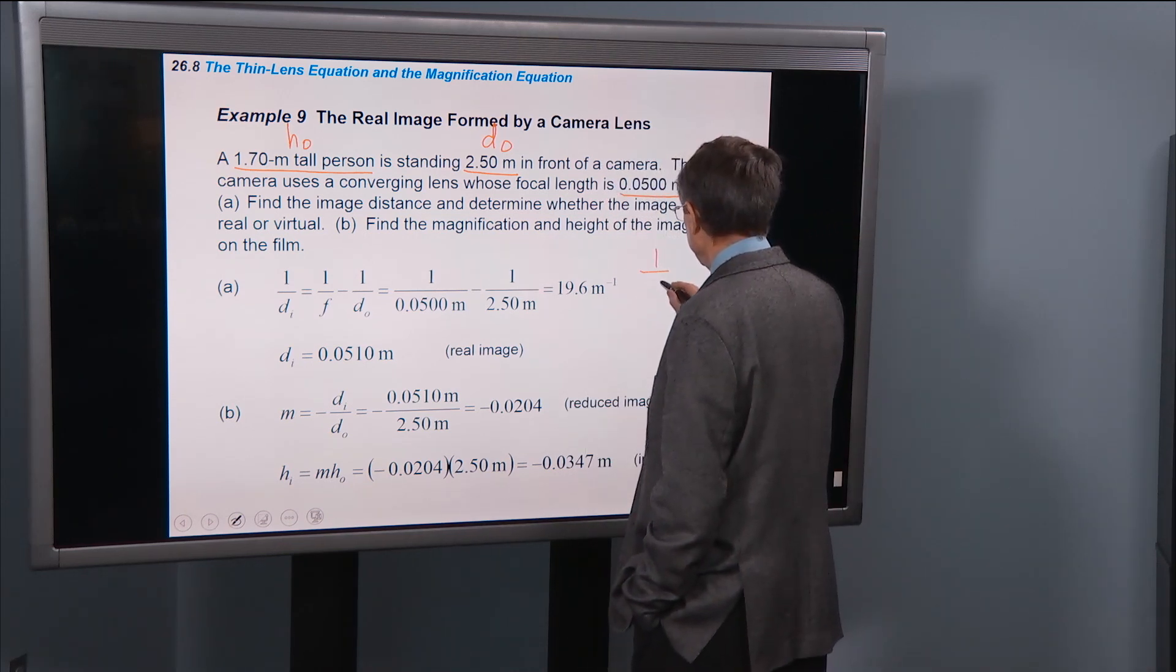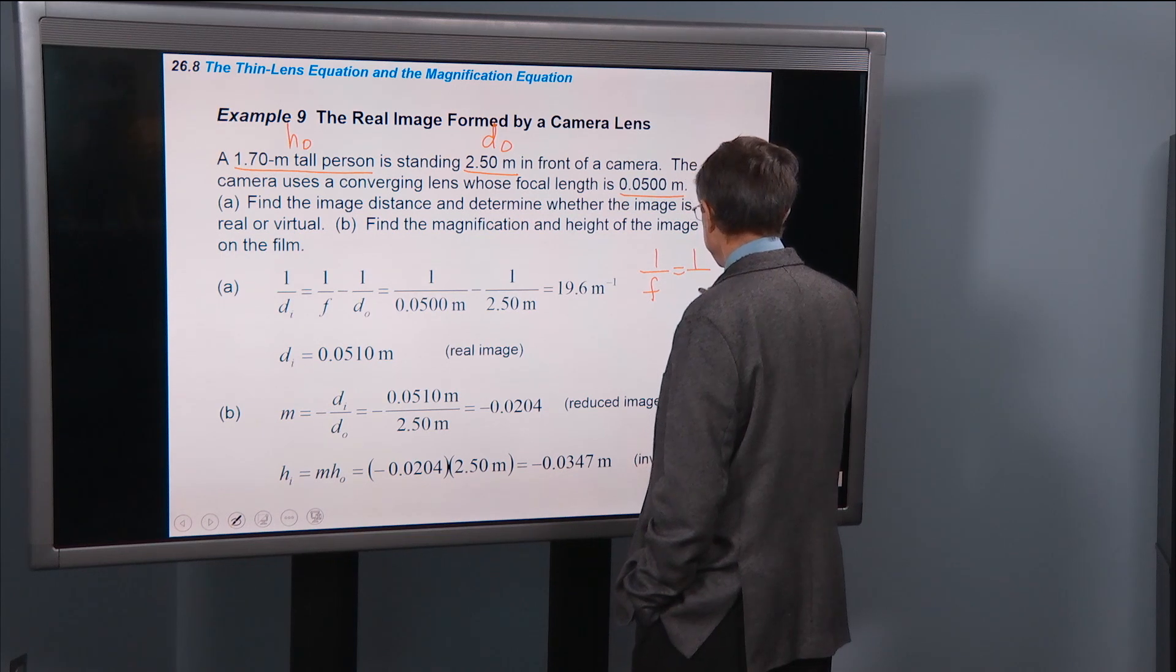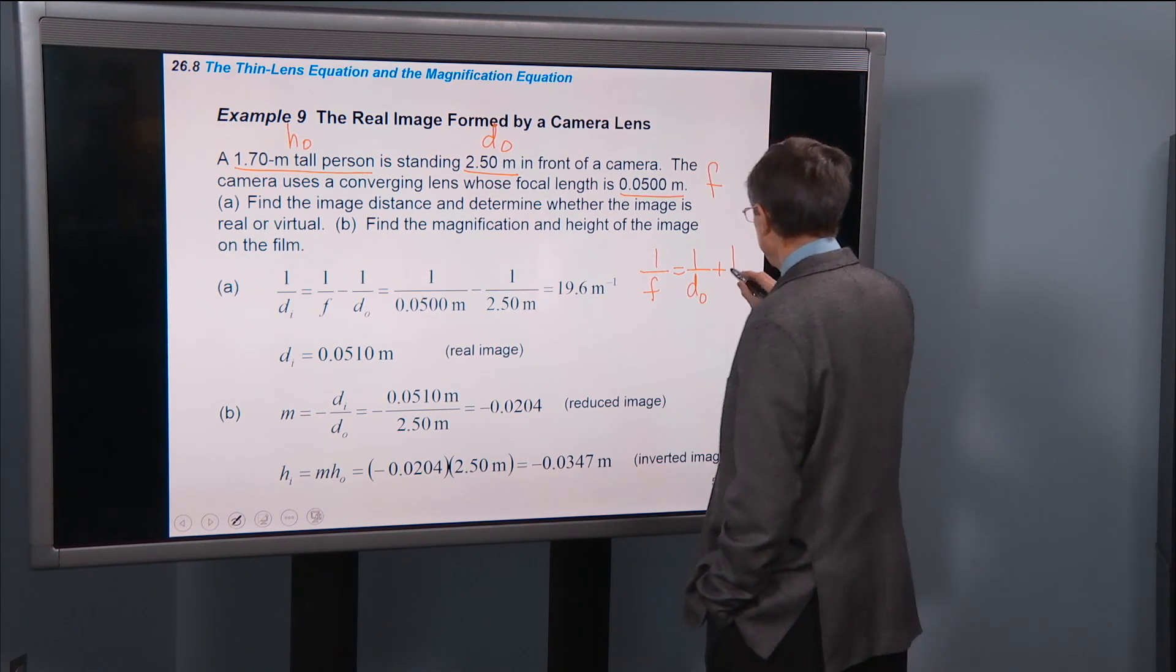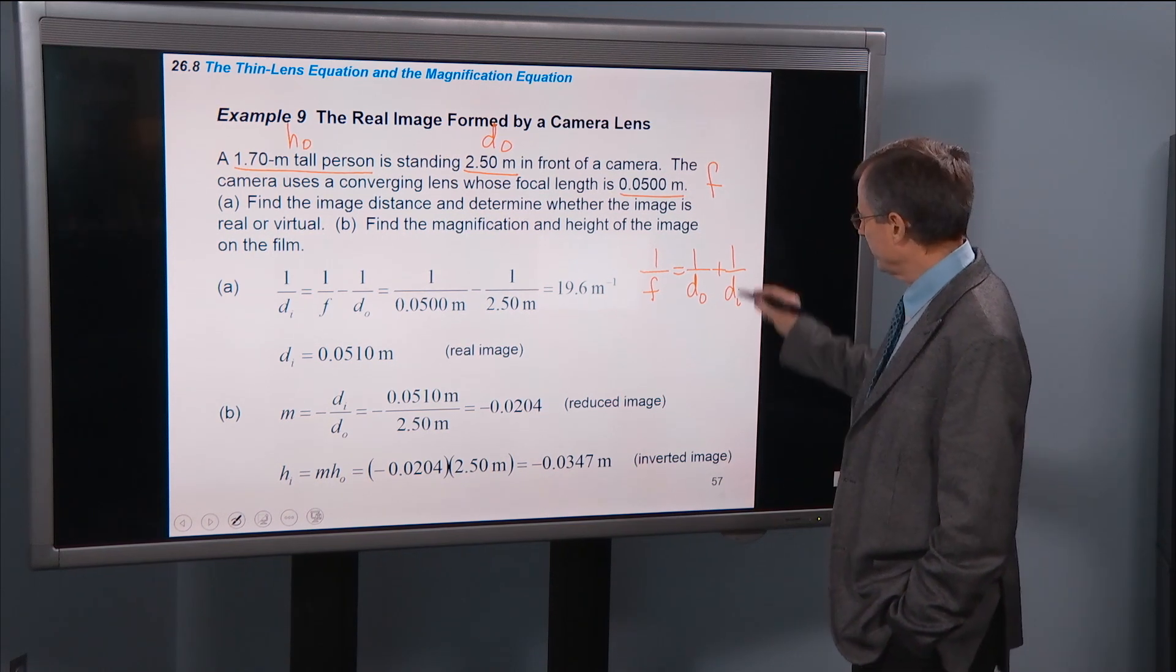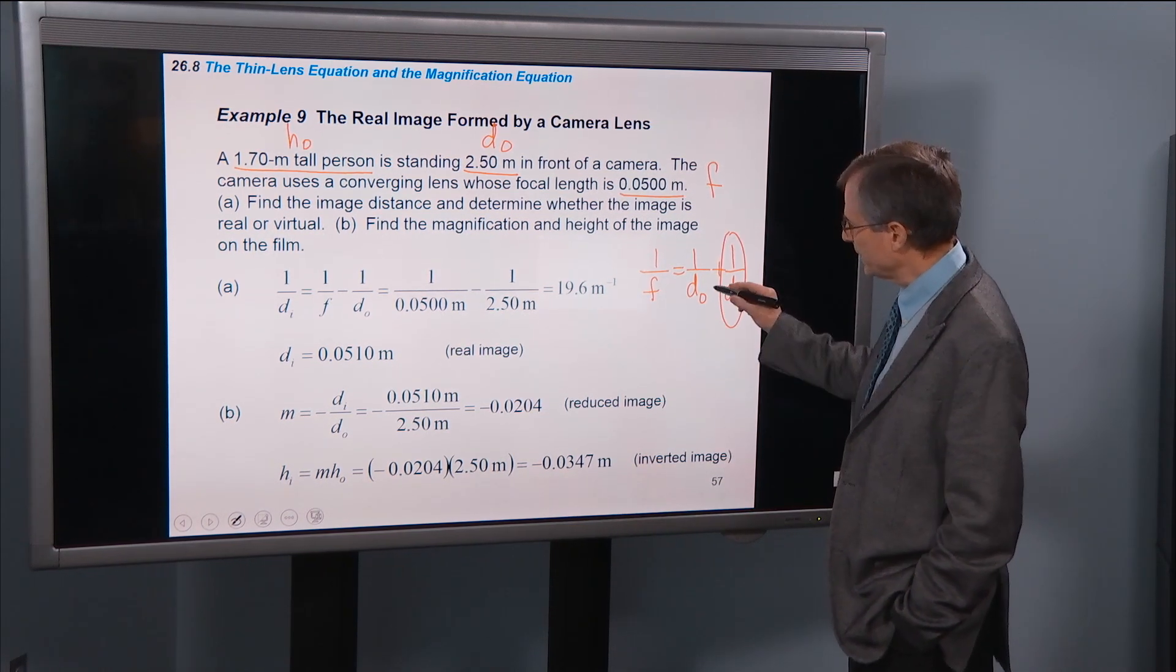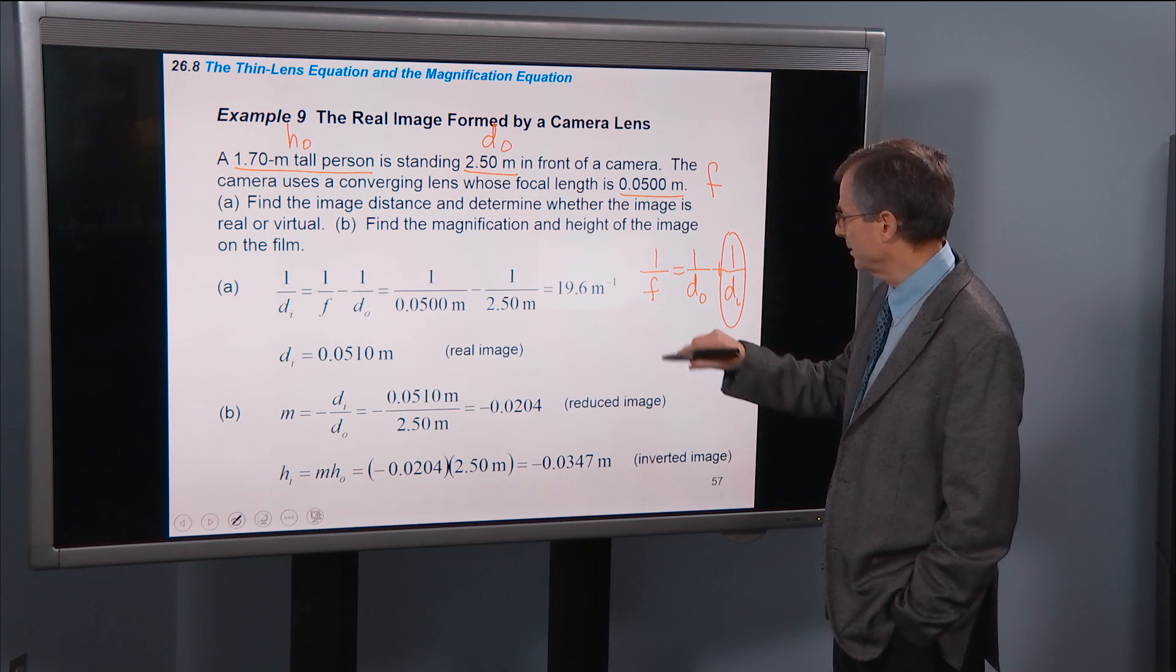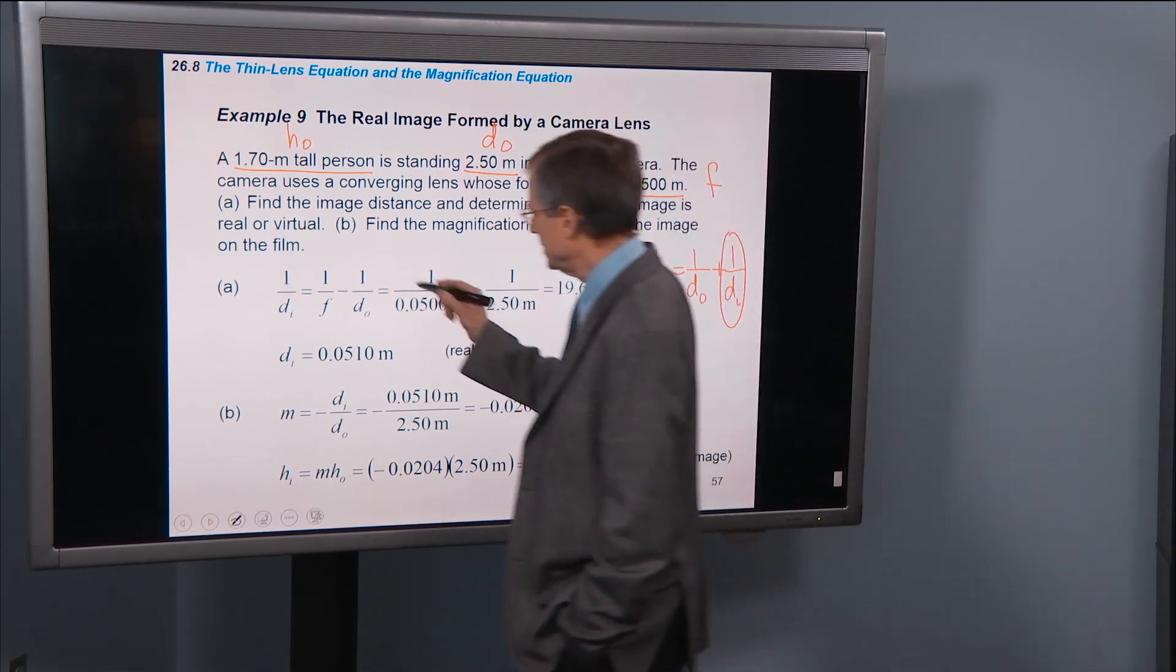We know that 1 over F is 1 over D0 plus 1 over Di. We can solve that for 1 over Di by subtracting 1 over D0 from both sides. And this is what we get.